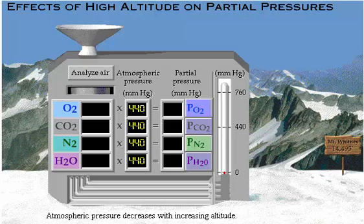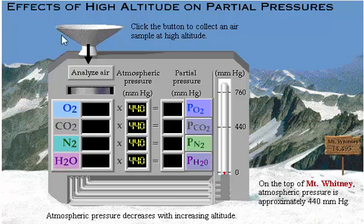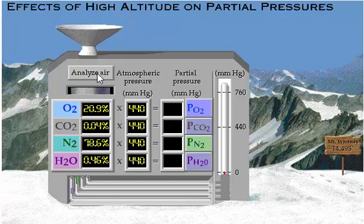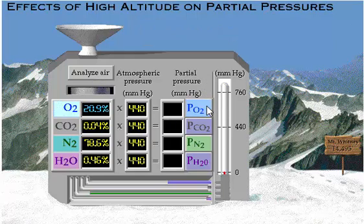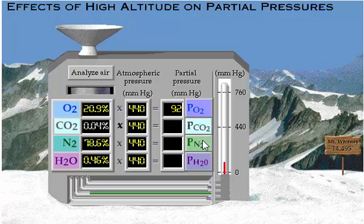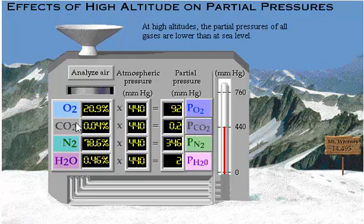Atmospheric pressure decreases with increasing altitude. For example, on the top of Mount Whitney, atmospheric pressure drops to approximately 440 millimeters of mercury. Click the button to collect an air sample at high altitude. Oxygen still makes up 20.9% of the atmosphere, but the PO2 is 20.9% of 440 millimeters of mercury, or about 92 millimeters of mercury. At high altitudes, the partial pressures of all gases are lower than at sea level.